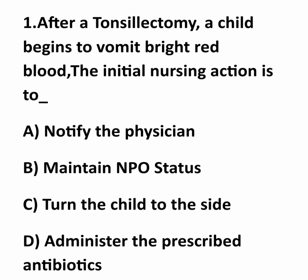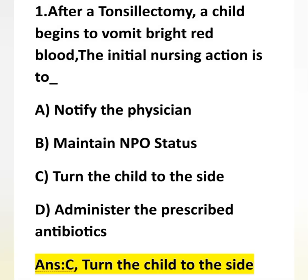Option C) turn the child to the side, and option D) administer the prescribed antibiotic. After tonsillectomy, if bleeding or vomiting occurs, the nurse should immediately turn the child to the side — that is option C — and then notify the physician.